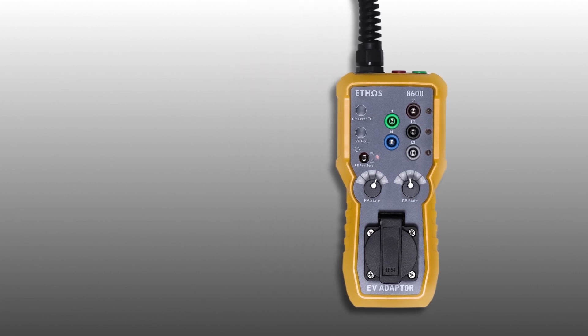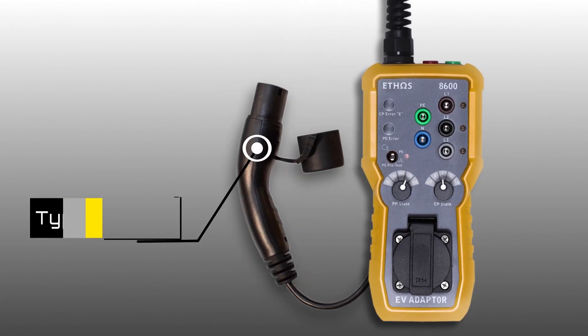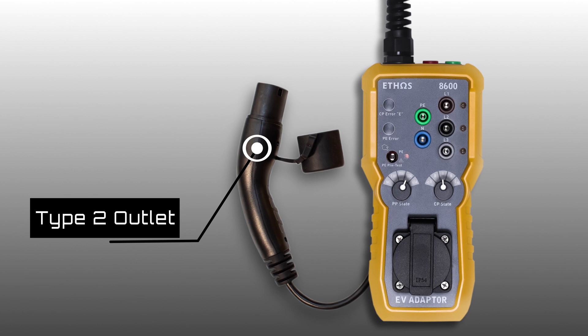The Ethos 8600 is supplied with a type 2 to type 1 adapter if you are required to test a type 1 electric vehicle charge point.